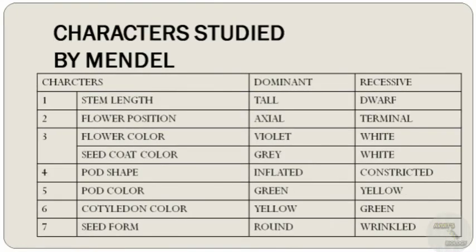A table shows the seven different characters of the pea plant which were studied by Mendel. In the F1 generation, the character of only one of the two parents is expressed — this character is known as the dominant character. The character of the other parent which is not expressed in F1 is referred to as the recessive character.